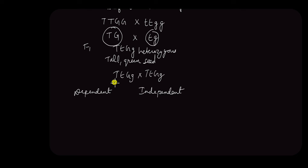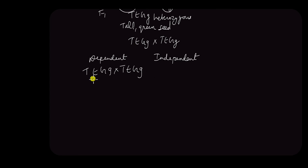If the traits are dependent on one another or if they are inherited together, then for this plant also, the gametes that are formed would be just this and this, like the parent plant. And if we were to draw a Punnett square depicting this cross, then this would be the genotypes of the offspring.